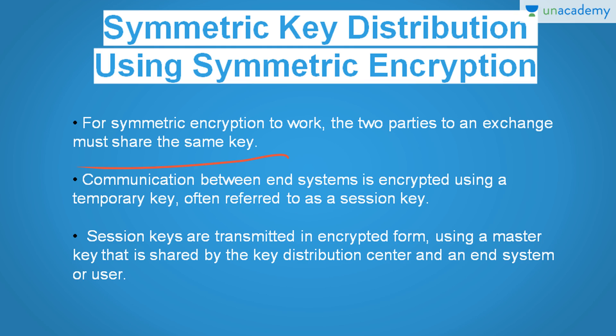For two parties A and B, key distribution can be achieved in a number of ways. A can select a key and physically deliver it to B, or a third party can be selected who can deliver the key to B, or a third party can select the key itself and physically deliver it to both A and B. If A and B have previously or recently used a key, one party can transmit the new key to the other encrypted using the old key. Now to make the encryption system stronger, two levels of keys are used.